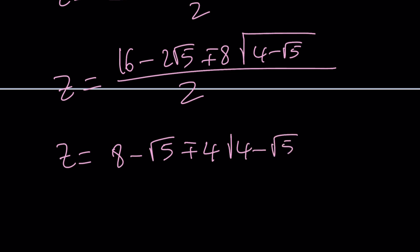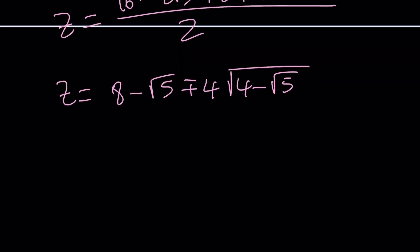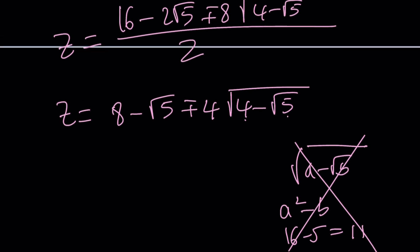Can we denest this radical? I don't think so. You can easily test it by squaring this number and squaring that number and looking at their difference. Whenever you have something like this, the first thing you should check is whether this is a perfect square. In this case, it isn't because it's 16 - 5. So it's not denestable nicely, okay?